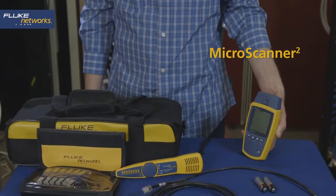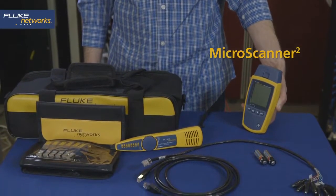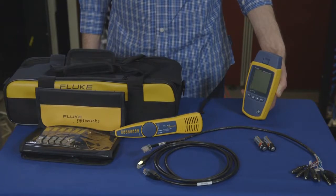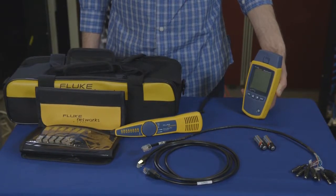This is the Fluke Network's Microscanner 2 kit and accessories. The Microscanner 2 kit is great for troubleshooting datacom, telecom, and coax cabling.